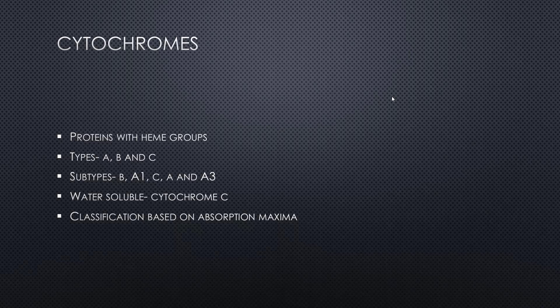Out of all these subtypes, there is one that brings extreme attention to itself, known as cytochrome C. Cytochrome C is specifically a water-soluble molecule — that is the most intriguing part of it, because the other subtypes like cytochrome B, A1, A, and A3 are all lipid-soluble.